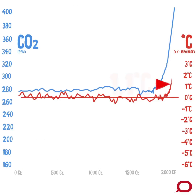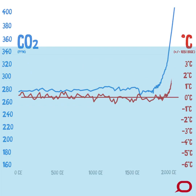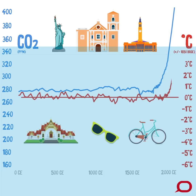Our current temperature is about 1 degree Celsius above pre-industrial levels. This might not sound like much, but the last time our climate was that warm was the last interglacial period, when sea levels were 6 to 9 meters higher — enough to creep into cities like New York, Manila, Brisbane, and flood Bangkok, Miami, Amsterdam, and many more.